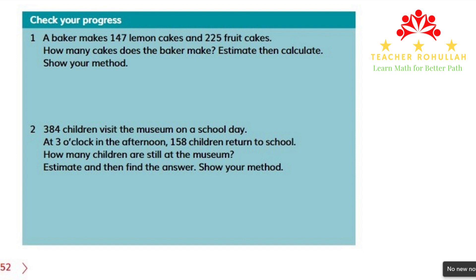Let's now start the lesson in which we were asked to check our progress. In question one, it says: a baker makes 147 lemon cakes and 225 fruit cakes. How many cakes does the baker make? We are asked to estimate and then calculate, and we are asked to show our method as well.